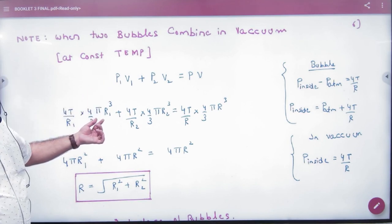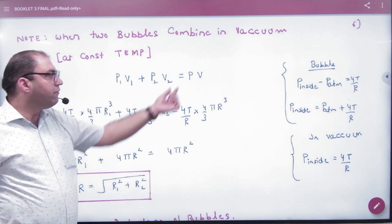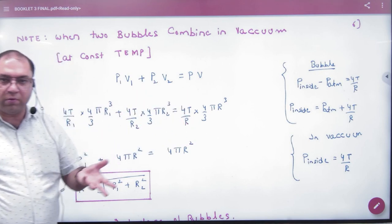It is 4T by R. So the pressure inside the bubble is 4T by R1 for the first bubble, then 4T by R2 for the second volume. If the new bubble has radius R,